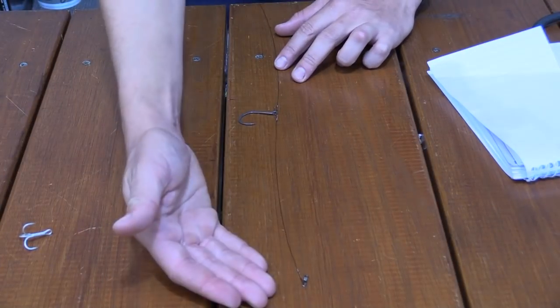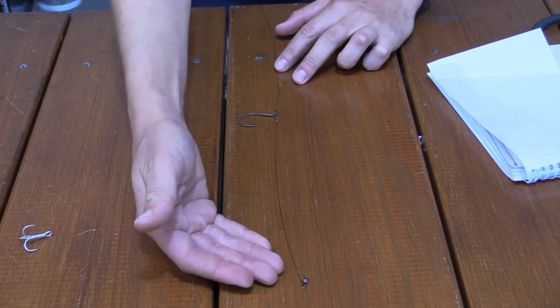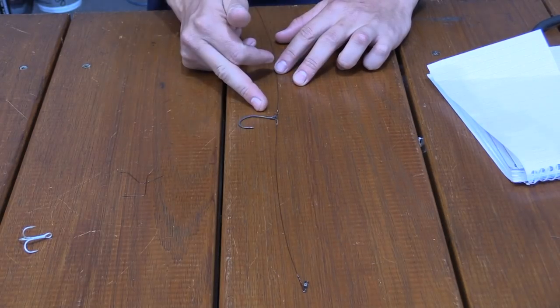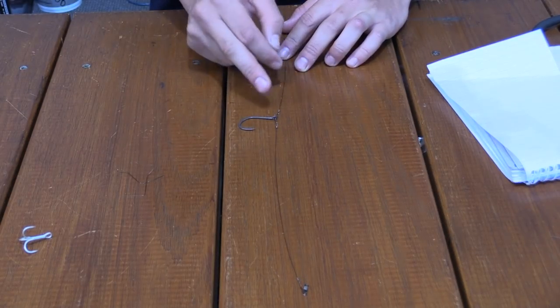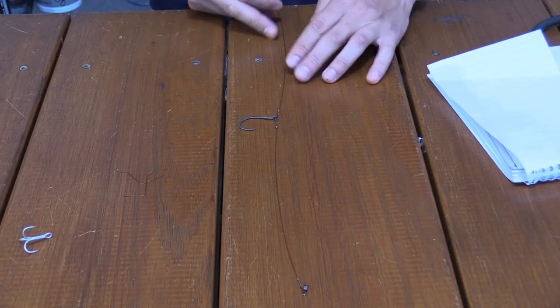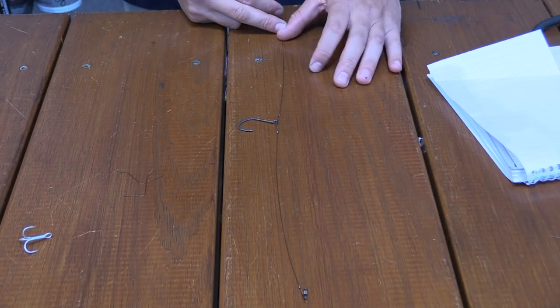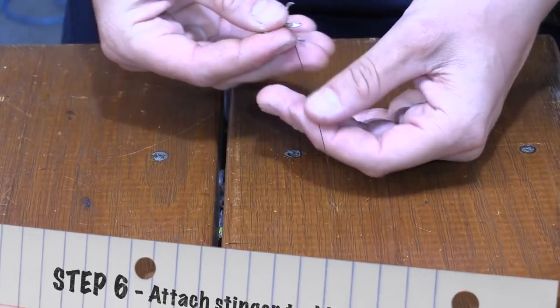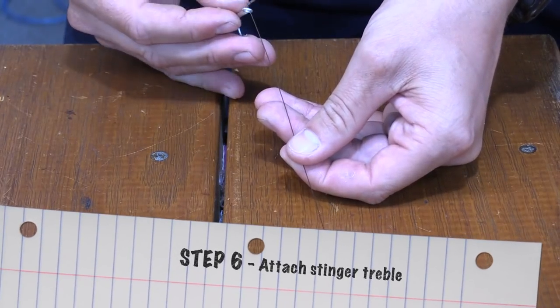This is your rig so far. Swivel at the top end, haywire twist, running down for first inline hook, second piece of wire, haywire twist, coming down and now we'll attach treble to the end. Grab your tag line off your main line there, feed on your treble.